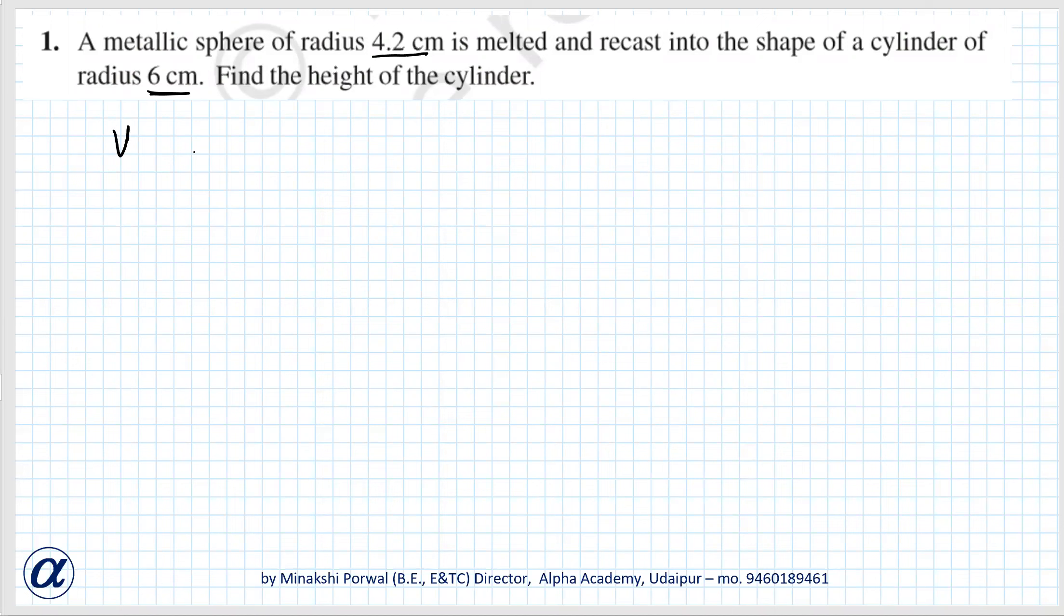So volume of the sphere will be equal to volume of cylinder. The sphere has radius 4.2 centimeter. Volume of sphere is 4 by 3 pi r cube.